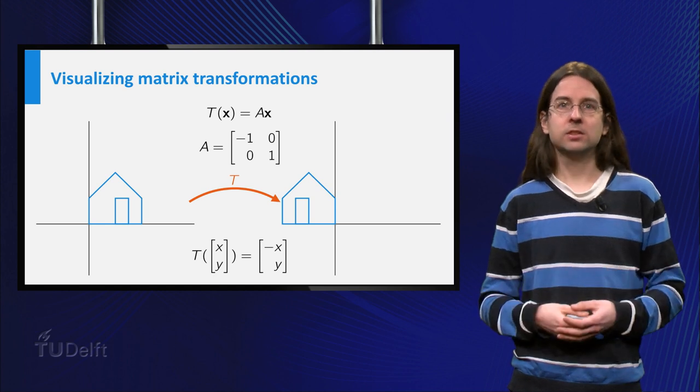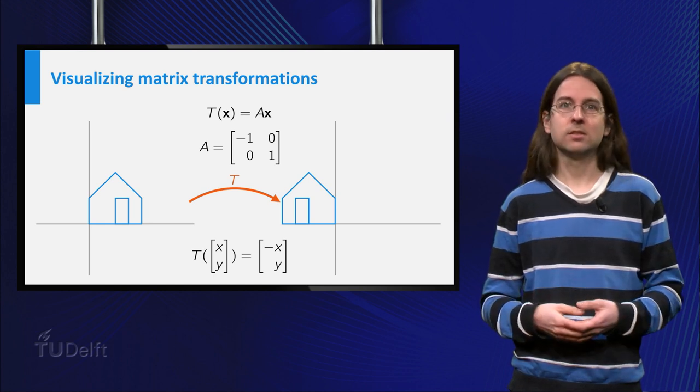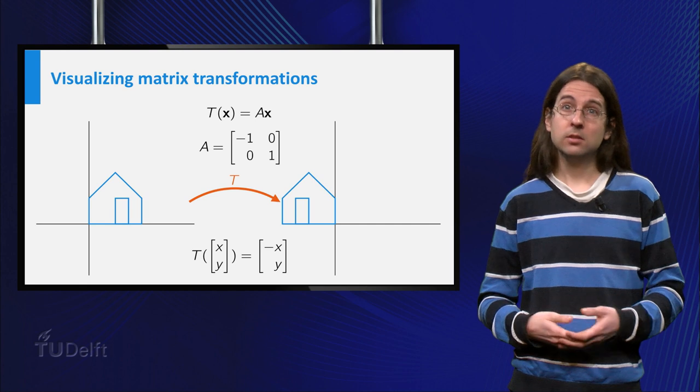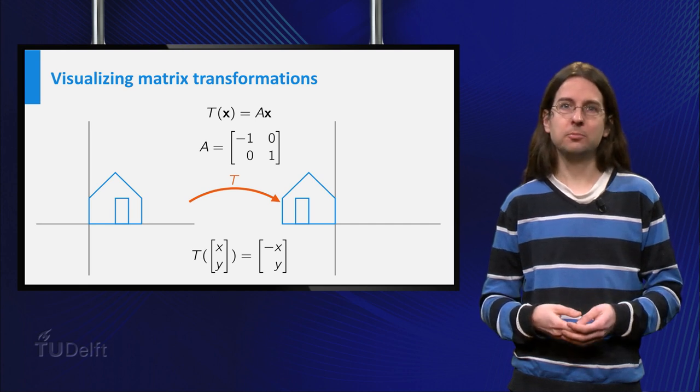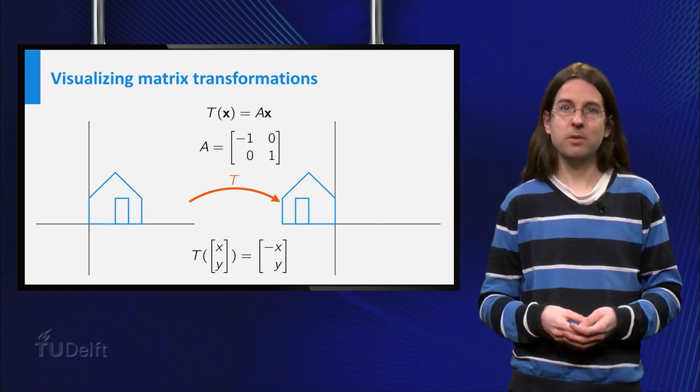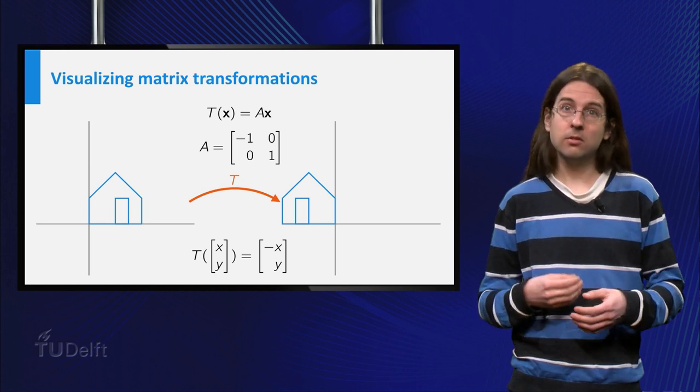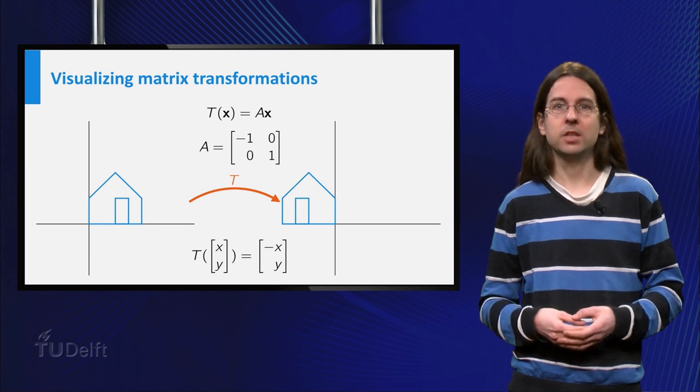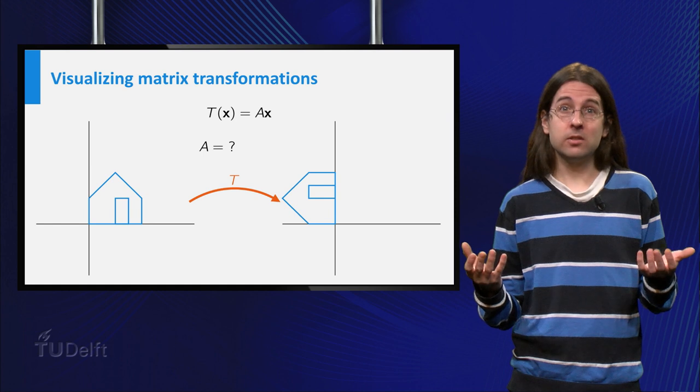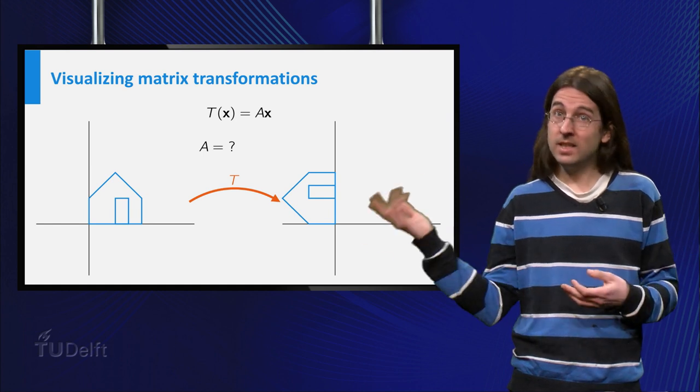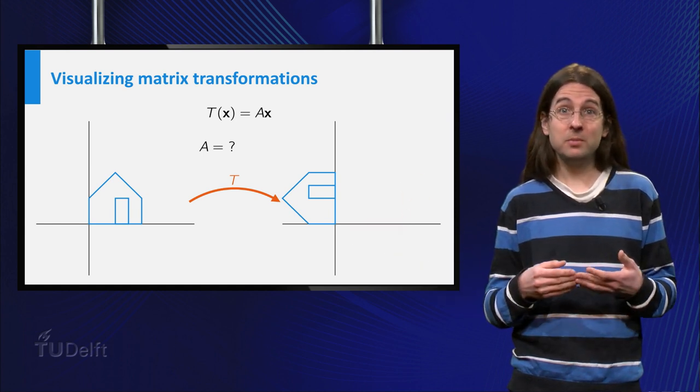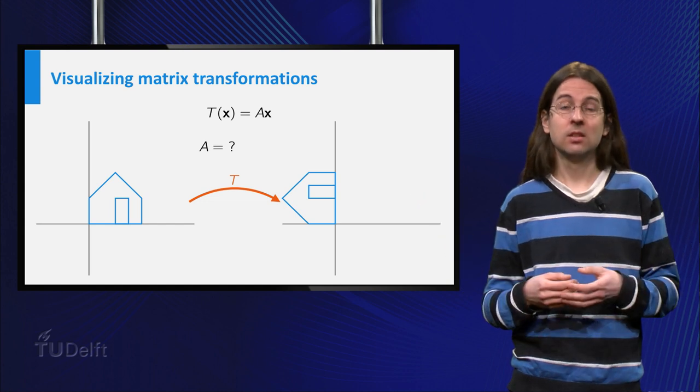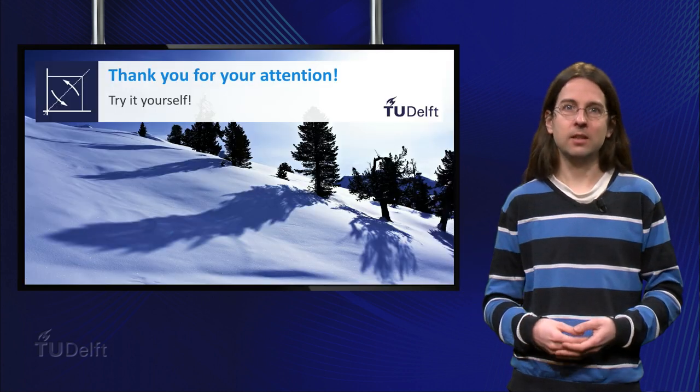We can create many more functions by using different matrices. In class we will study what kind of transformations can be expressed as matrix transformations, and how you can find the associated matrix A if you have such a transformation. Could a rotation over 90 degrees like this be a matrix transformation and what would be its matrix? Come to class to find out.